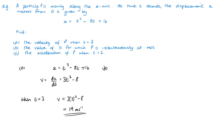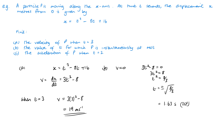For part b, we want the value of t for which the particle is instantaneously at rest, meaning v = 0. So 3t² − 8 = 0, giving 3t² = 8, so t² = 8/3 and t = ±√(8/3). This is approximately 1.63 to 3 significant figures. We need the positive value.